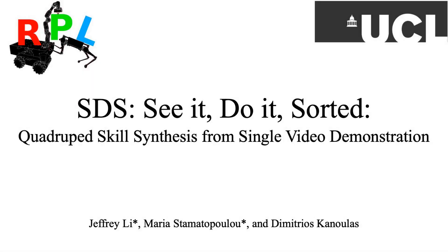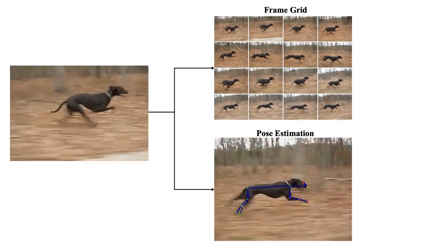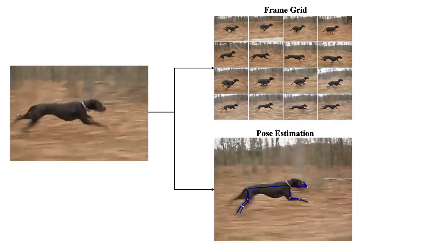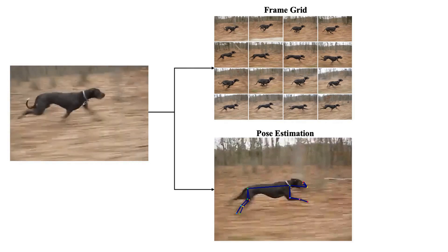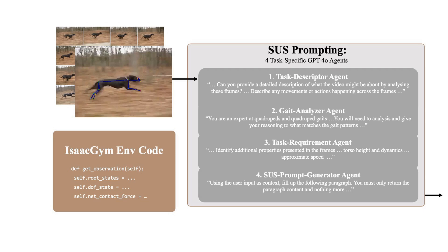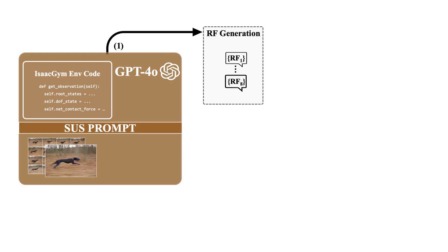We present SDS, an algorithm achieving quadruped skill synthesis from single video demonstration, leveraging the GPT-4o visual language model. We use demo videos of different quadrupeds performing various locomotion skills, which we segment into a grid and align pose estimation to improve tracking, as GPT-4o doesn't process video directly. The frames and the environment code from Isaac Gym, together with our innovative prompting technique incorporating four task-specific agents to improve task interpretability, drive the VLM to generate eight Pythonic reward functions — EREFs — to imitate the skill.